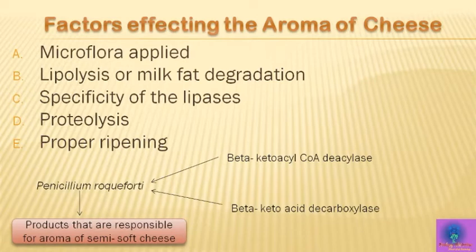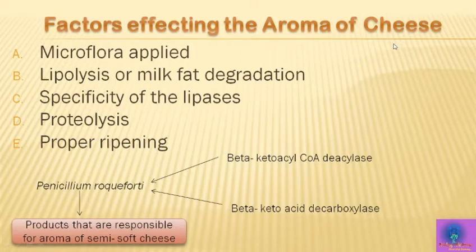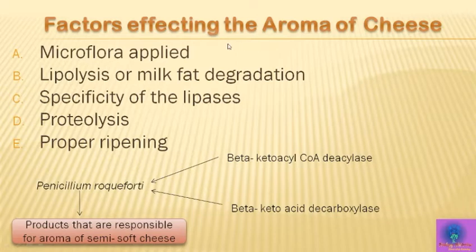In blue-vein cheeses such as Roquefort, Stilton, and Gorgonzola, protein degradation to amino acids occurs through peptides as intermediary products. Depending on the cheese variety, 20 to 40 percent of casein is transformed into soluble protein derivatives, of which 5 to 15 percent are amino acids. A pH range of 3 to 6 is optimum for the activity of peptidases from Penicillium roqueforti. Proteolysis is strongly influenced by the water and salt content of the cheese. The amino acid content is 2.8 to 9 percent of cheese solids, and glutamic acid is of special importance for cheese taste. Ripening defects can produce bitter-tasting peptides.